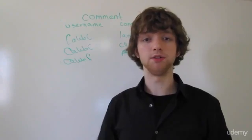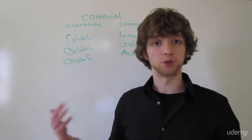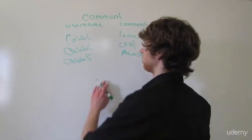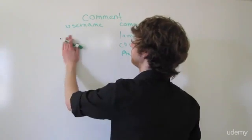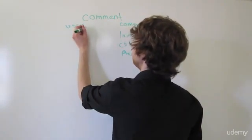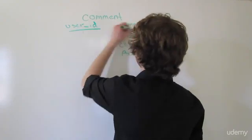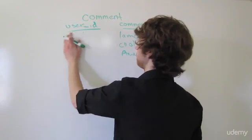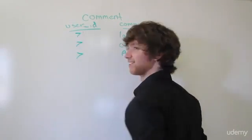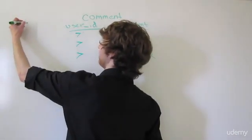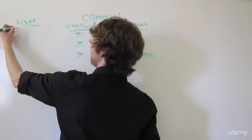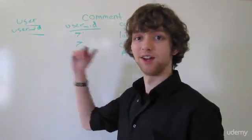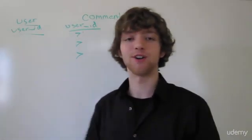But this isn't the best way to do this because we learned about data integrity and also repeating data because now we have this in here three times. So instead, we use a user ID. We get rid of Caleb C. And we get rid of the username. We have a user ID. And then in here, we have the user ID 7, 7, 7. And then over here, we have a user table with the user ID column, which has all of our user IDs for each individual person.